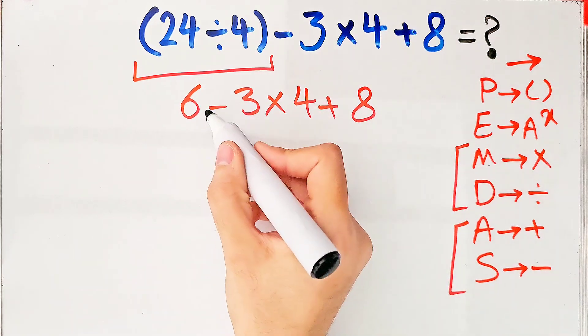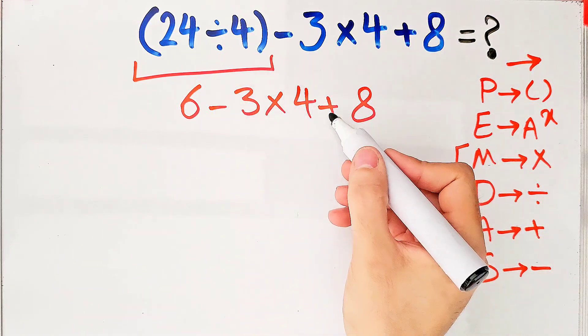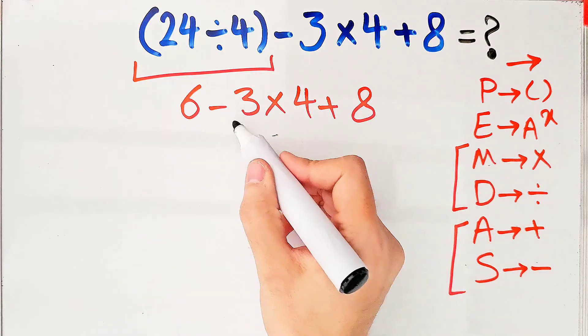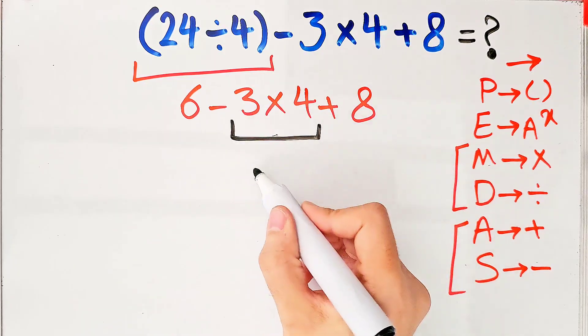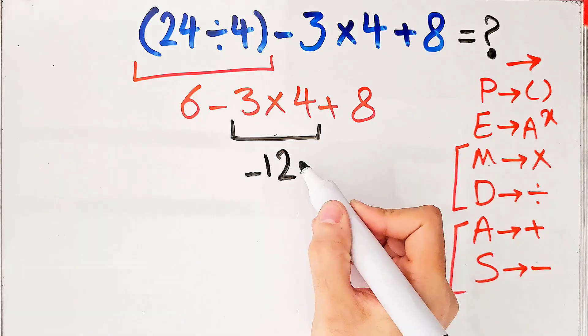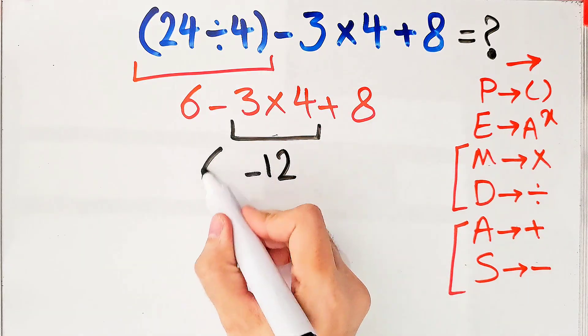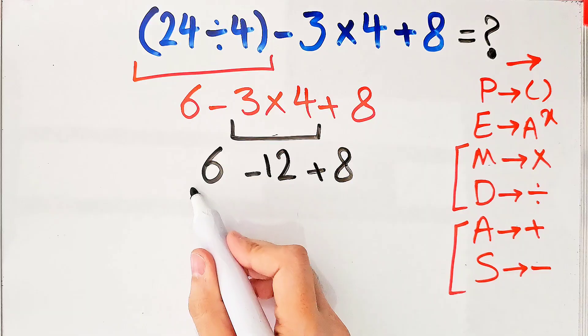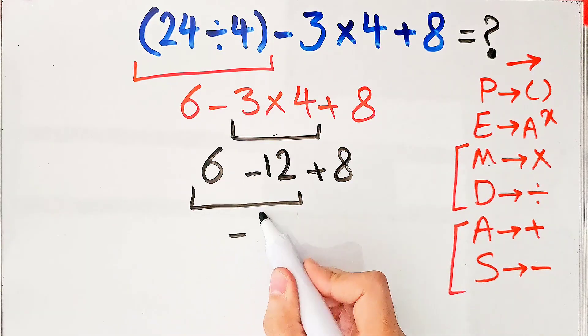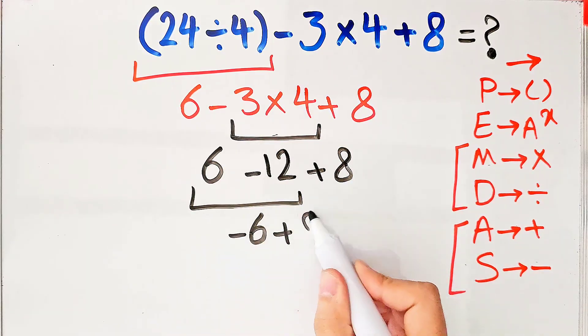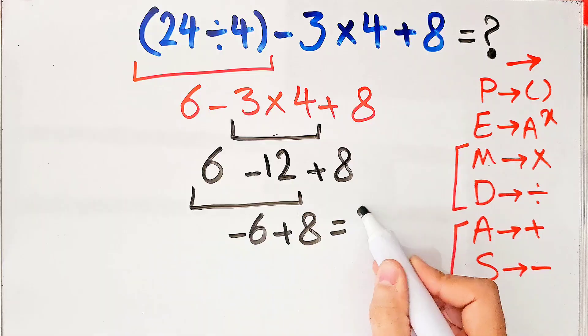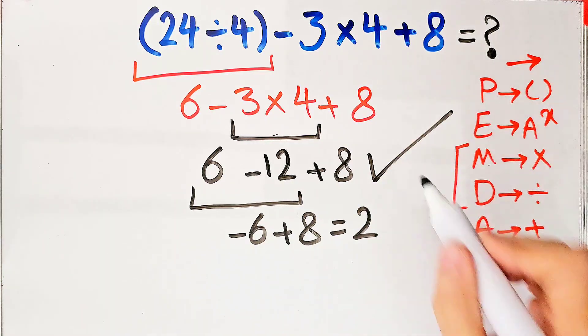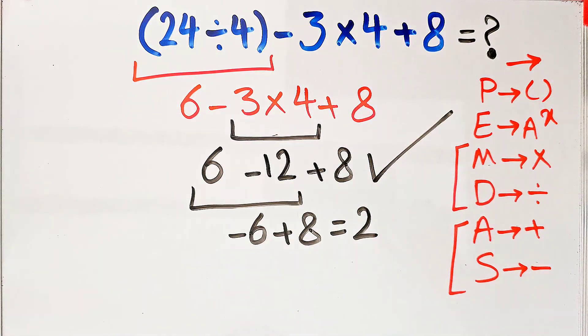Now we have subtraction, multiplication, and addition. First we simplify this multiplication: negative 3 times 4 equals negative 12. Now we have 6 minus 12, then plus 8. 6 minus 12 equals negative 6, and negative 6 plus 8 equals 2. The final answer of this question equals 2. Thanks for watching guys! To see more math videos, subscribe to the channel.